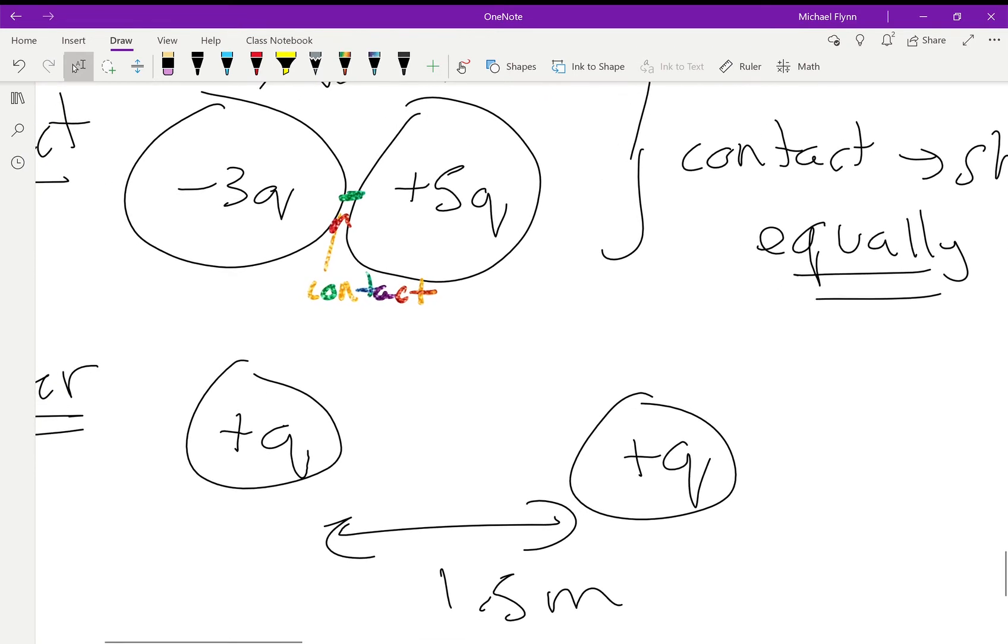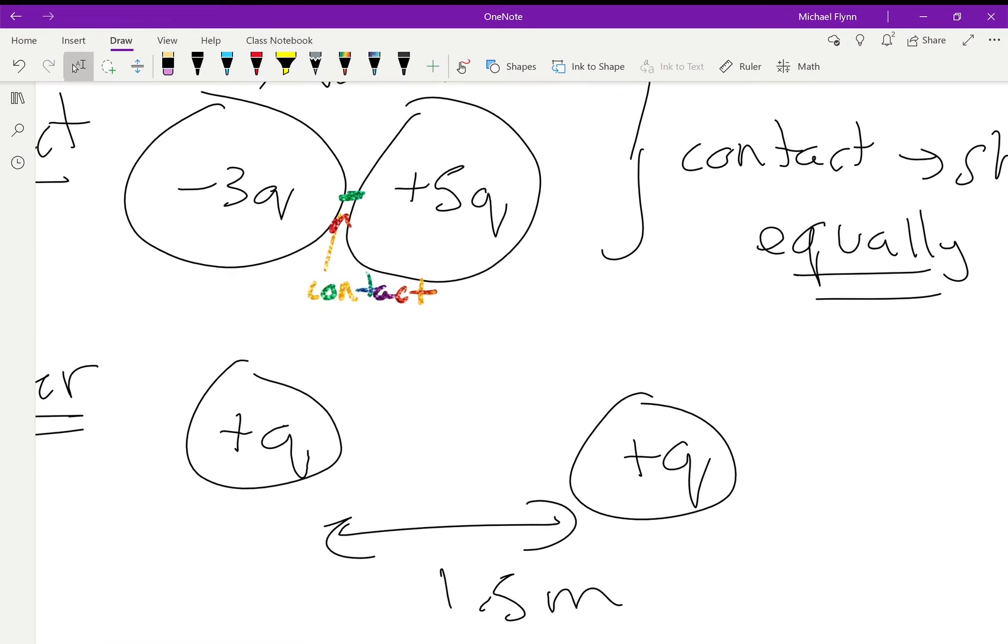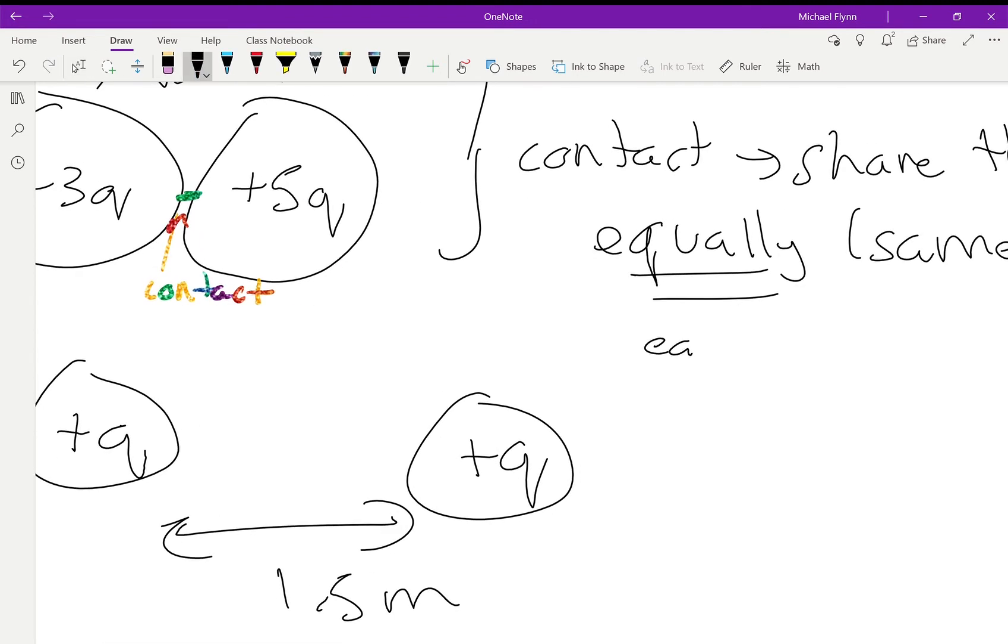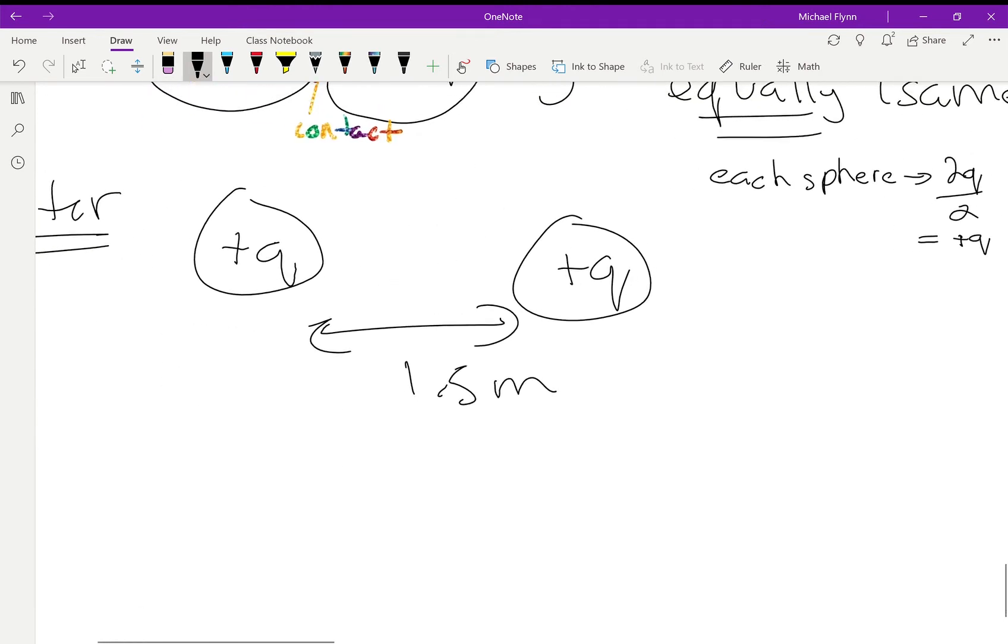So then they're separated out to a distance of 1.5 meters. You see what they've done? There's a total charge of 2q, so they each get 1q each. Just take the total and divide by 2, so each sphere gets 2q divided by 2, or just positive q each.